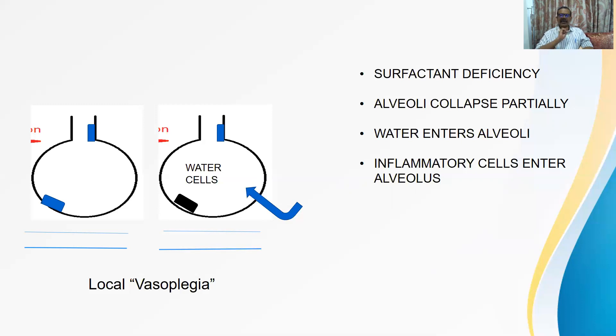So here there is a fundamental difference. The key difference between P-type and C-type is happening here. Local vasoplegia. This is a beautiful term coined by Italian intensivist Gattinoni. Local vasoplegia. What is this local vasoplegia? We are knowing about paraplegia, monoplegia, paralysis. Unable to function, unable to contract, unable to constrict. So this is the local vasoplegia.